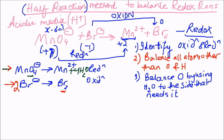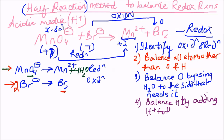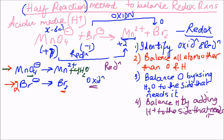The fourth step is to balance hydrogens by adding protons to the side that needs it. There's no hydrogen issue in the oxidation half. In the reduction half, I now have four times two — eight hydrogens on the right from the water molecules — so I must add eight protons to the left-hand side.